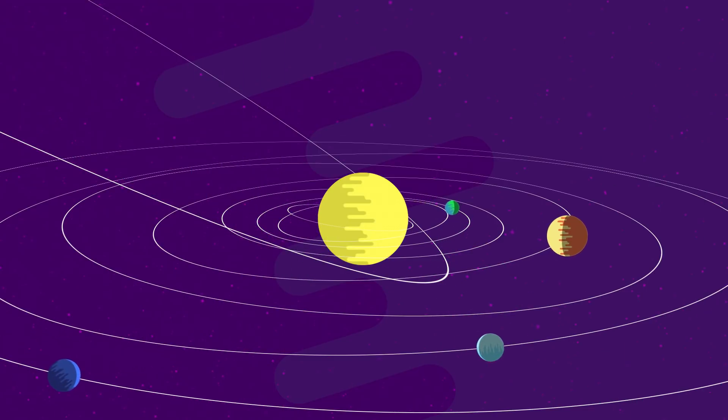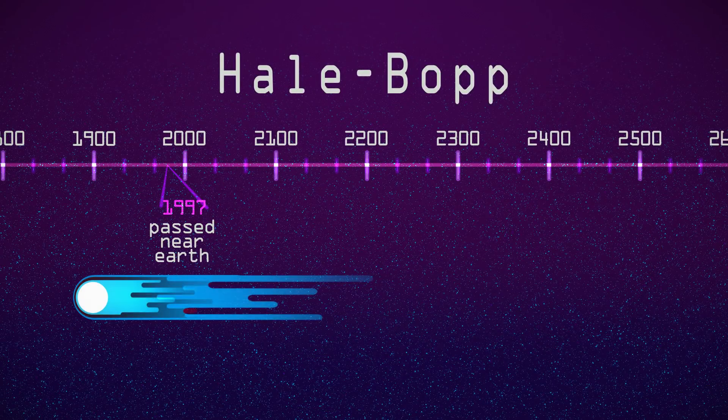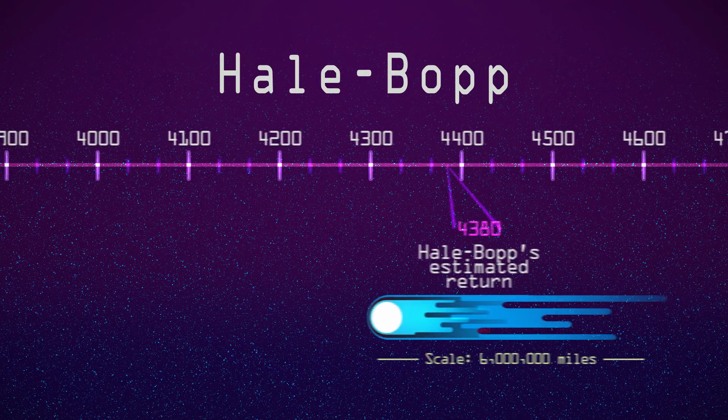Because they have such eccentric orbits and come from so far away, some comets take hundreds to millions of years to orbit the sun. For example, we won't be seeing Hale-Bopp again until the year 4,380.